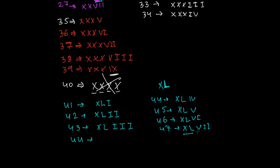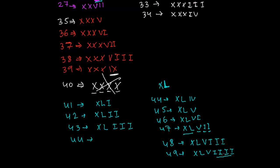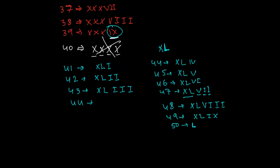For 48, write XL then VIII: XLVIII. For 49, we cannot write four I's after XL, so we use IX for 9, giving XLIX. For 50, we simply write L.